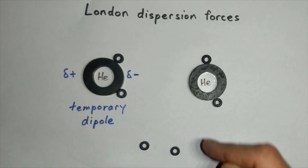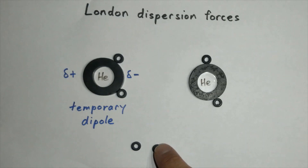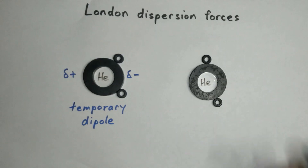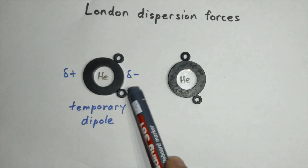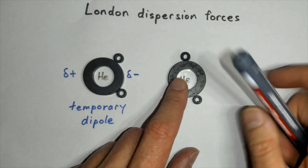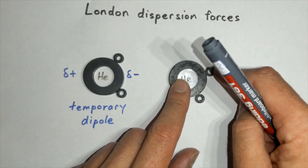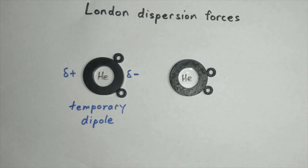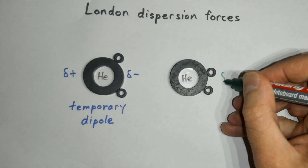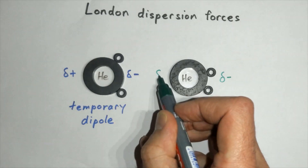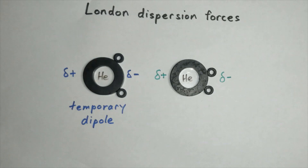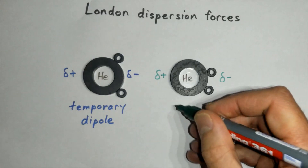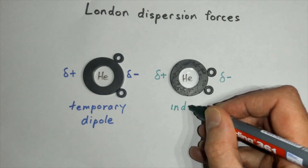The electrons are negatively charged and will repel each other when they come in the vicinity of each other. So if we have a neighboring helium atom, this negative charge generated by the temporary dipole will repel these electrons to this side of the helium atom, generating a delta negative charge at this side and a delta positive charge at the other side. Because this dipole has been caused or induced by a neighboring atom, we call this an induced dipole.